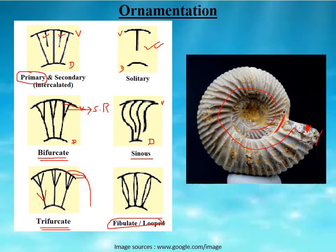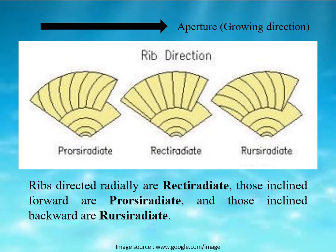Radial elements may be directed in different ways: when inclined towards the growing direction (towards the aperture), they are known as prorsiradiate; when inclined opposite to the aperture direction, they are retrorsiradiate; when neither inclined towards nor away from the aperture direction, they are rectiradiate.